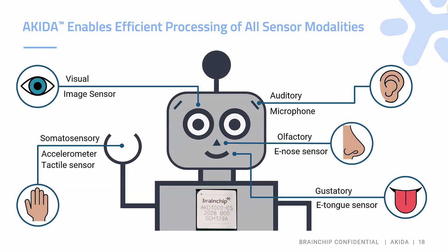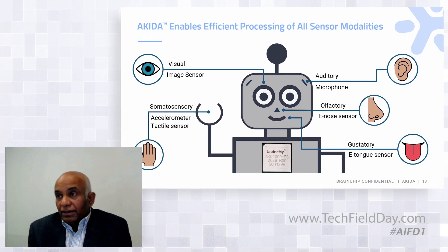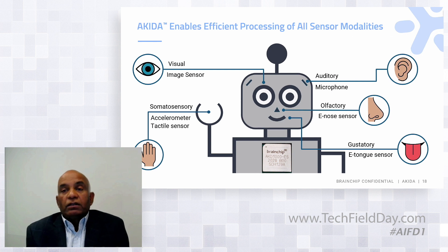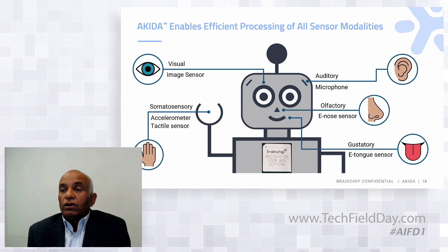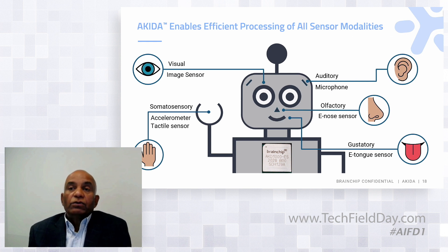So why do we do all these things, and where is the best advantage of neuromorphic computation? Think about a robot. Akira enables efficient, low-power processing at the edge, next to the sensor — inference for visual input like image sensors from a camera for object classification and object detection. It also handles auditory input data from a microphone.